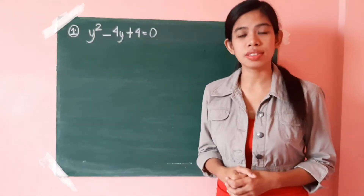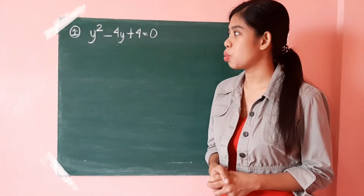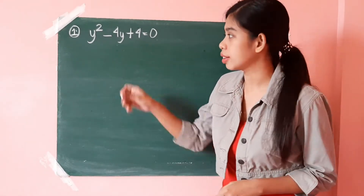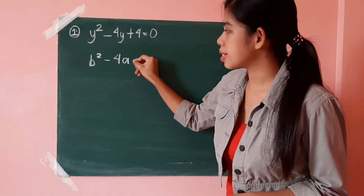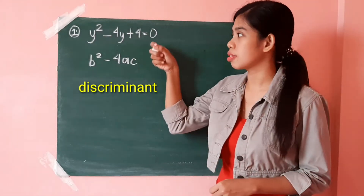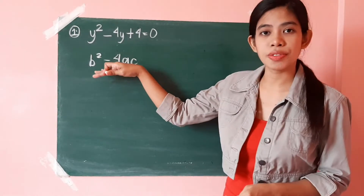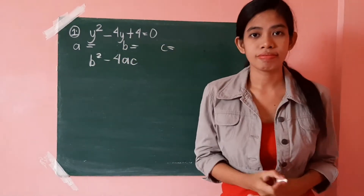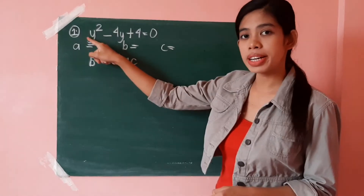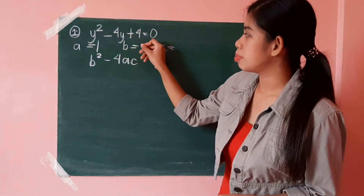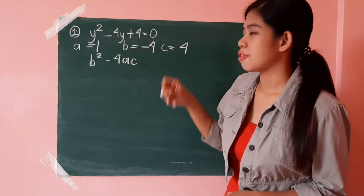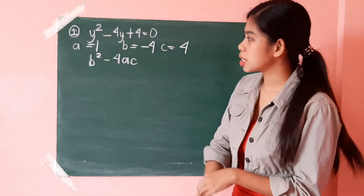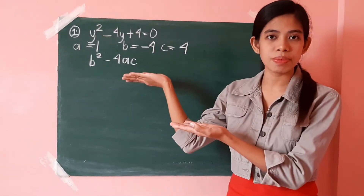Let's take this quadratic equation as an example: y squared minus 4y plus 4 equals 0. All we need to do is find the value of the discriminant b squared minus 4ac to determine the nature of the roots. Before using the discriminant, you have to first find the values of a, b, and c. Make sure the quadratic equation is written in standard form. So the value of a is 1, b is negative 4, and c is 4.